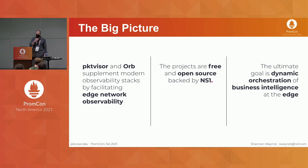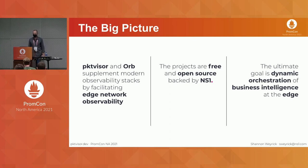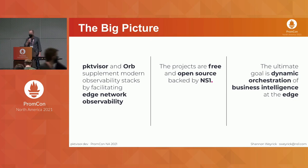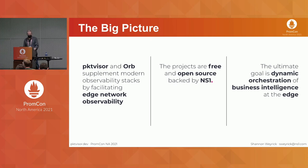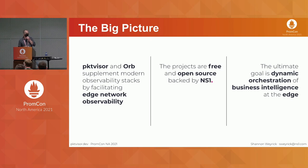I'll talk about this project called Packetvisor, and also a project that's grown out of Packetvisor called Orb. Together, the goal is to supplement modern observability stacks and help you with edge network observability. Both of these projects are free and open source, and their goal is what we call dynamic orchestration of business intelligence at the edge. Business intelligence means extracting actionable insights from these data streams, and the goal is to push that process out to the edge.